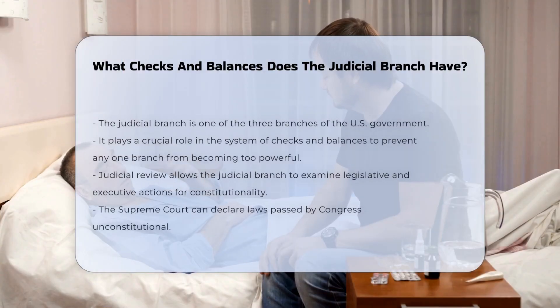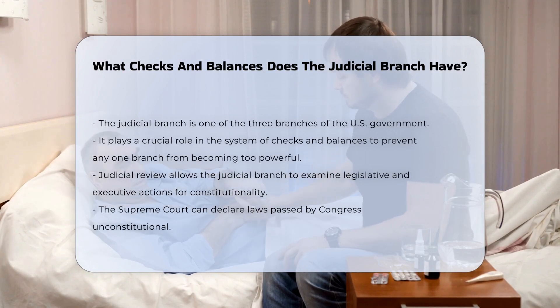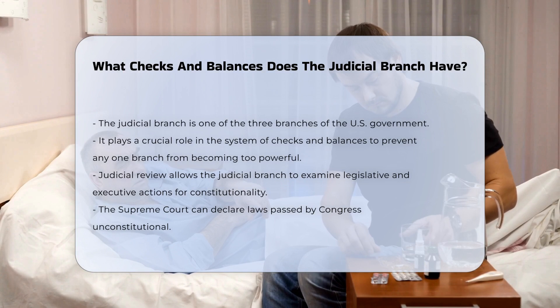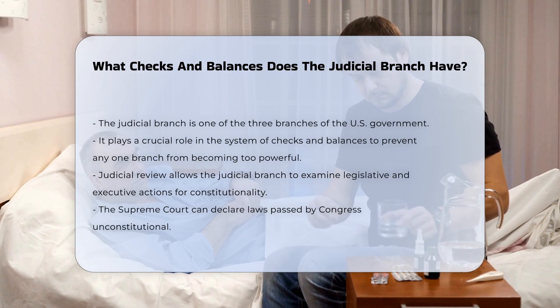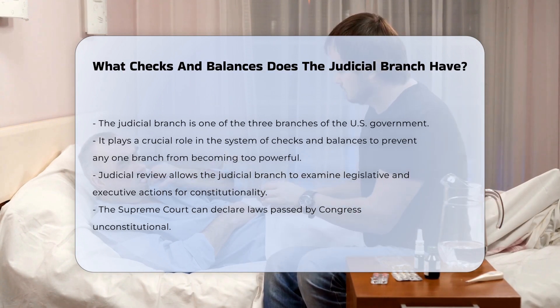The judicial branch, one of the three branches of the U.S. government, plays a crucial role in the system of checks and balances. This system is designed to prevent any one branch from becoming too powerful.